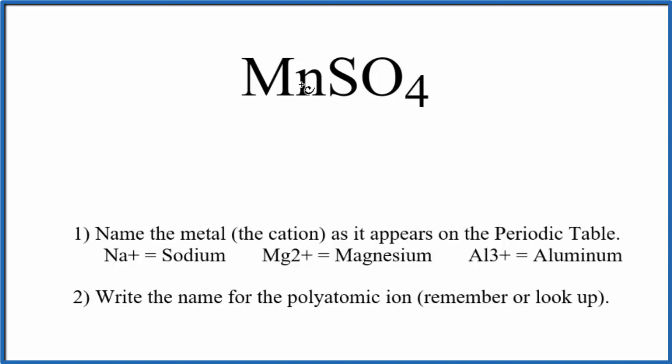The sulfate ion here is bonded to Mn, that's manganese, and this is a transition metal. So we have this metal here and these non-metals in the polyatomic ion. This is an ionic compound with a transition metal. We can use these rules here to write the name.